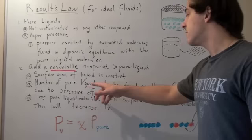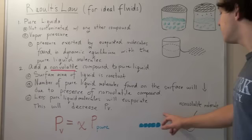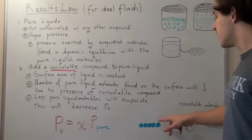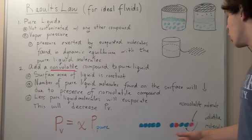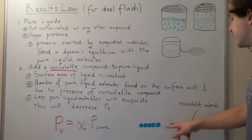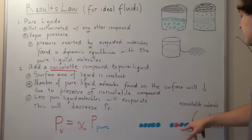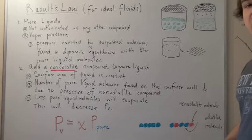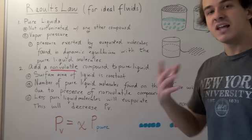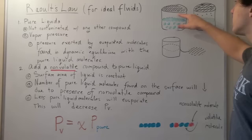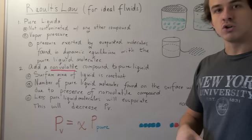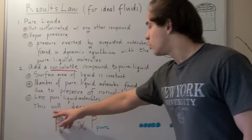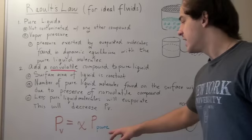What will change, however, is the number of pure liquid molecules found on the surface area — and this number will decrease, because of the presence of non-volatile compounds. Before addition, we have water molecules found on the surface area, and these water molecules will escape and condense back into the liquid state. After the addition, we're going to have some non-volatile compounds replacing these molecules, meaning less pure molecules are present on the surface. Since evaporation occurs on the surface of the liquid, if there are fewer volatile molecules that evaporate, fewer gas molecules will be present at equilibrium — and this means the vapor pressure is less. And this is Raoult's Law.